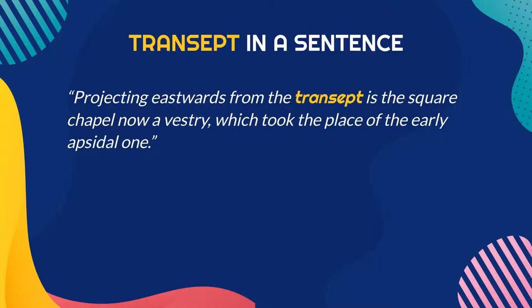Second example: Projecting eastwards from the transept is the square chapel, now a vestry, which took the place of the early apsidal one.